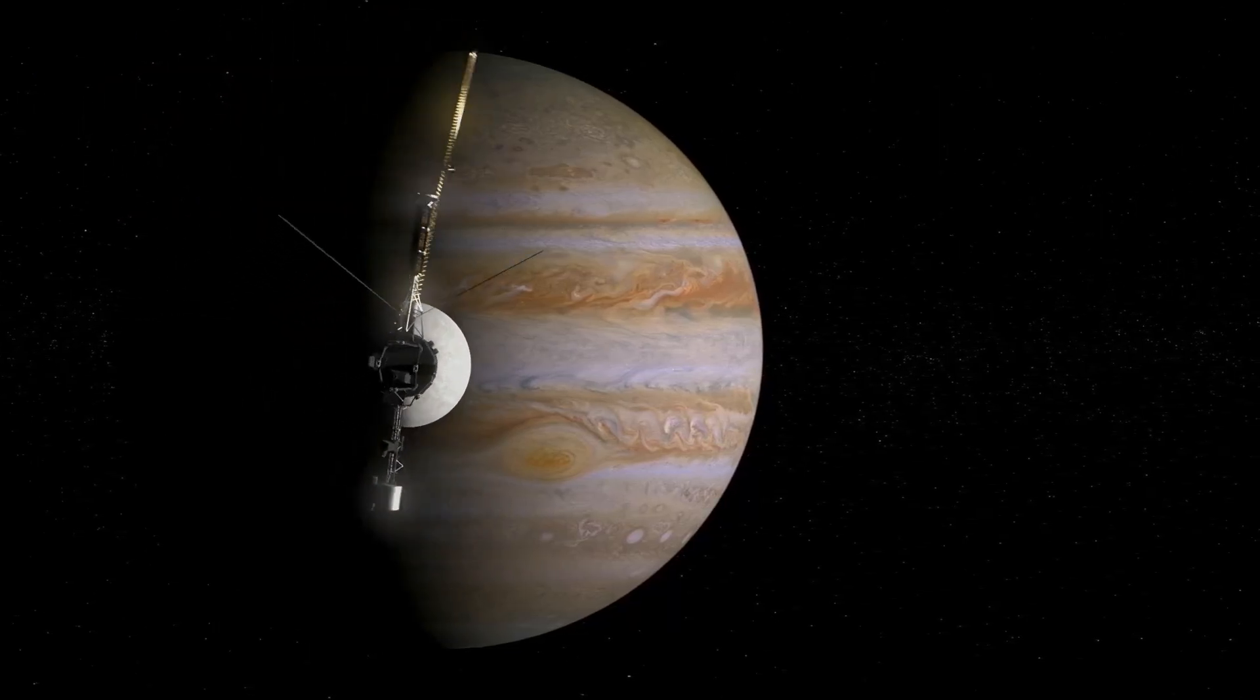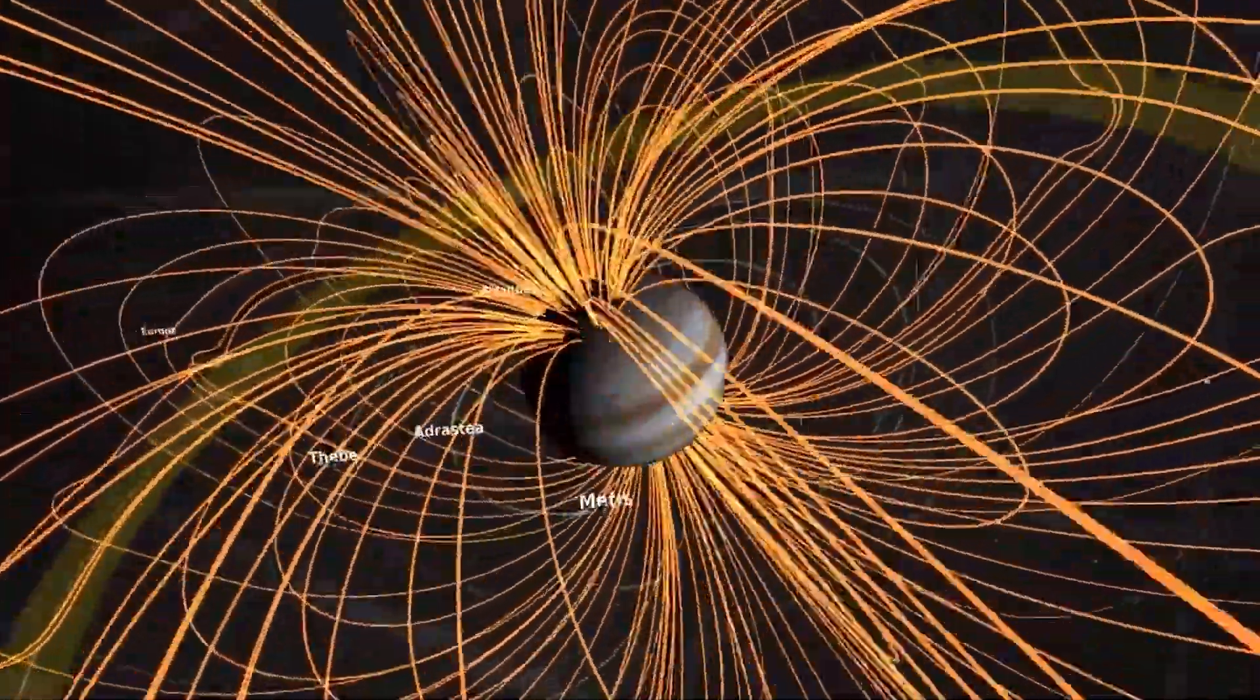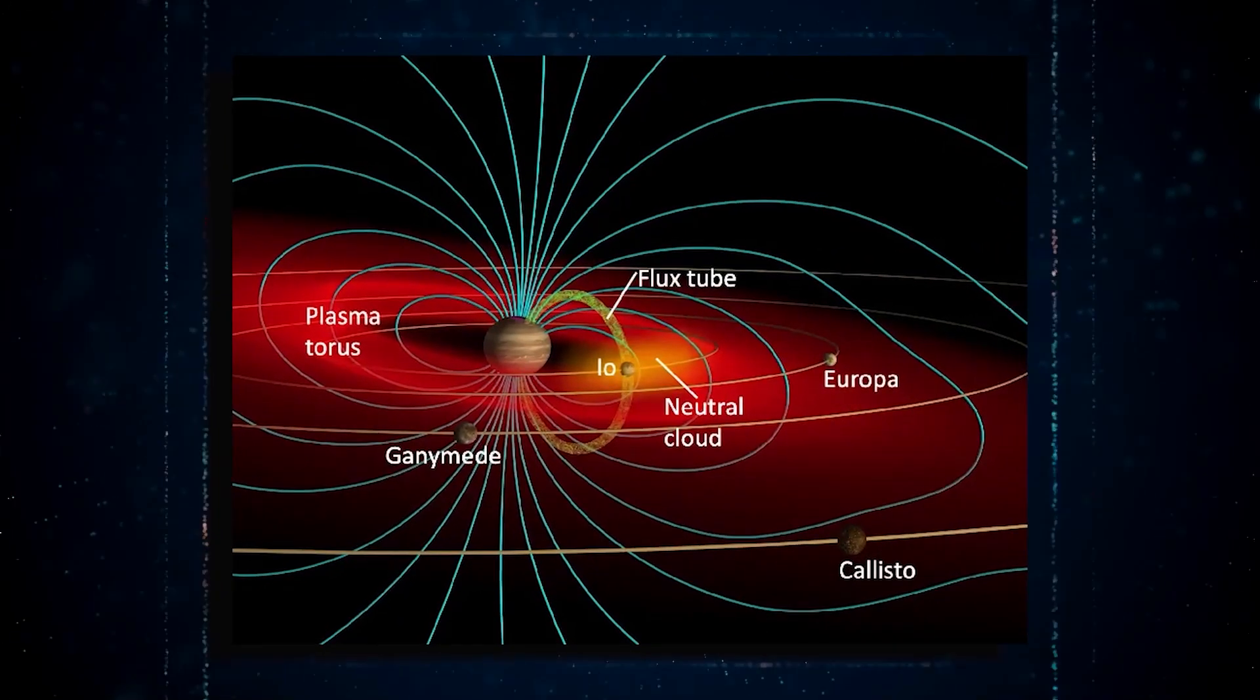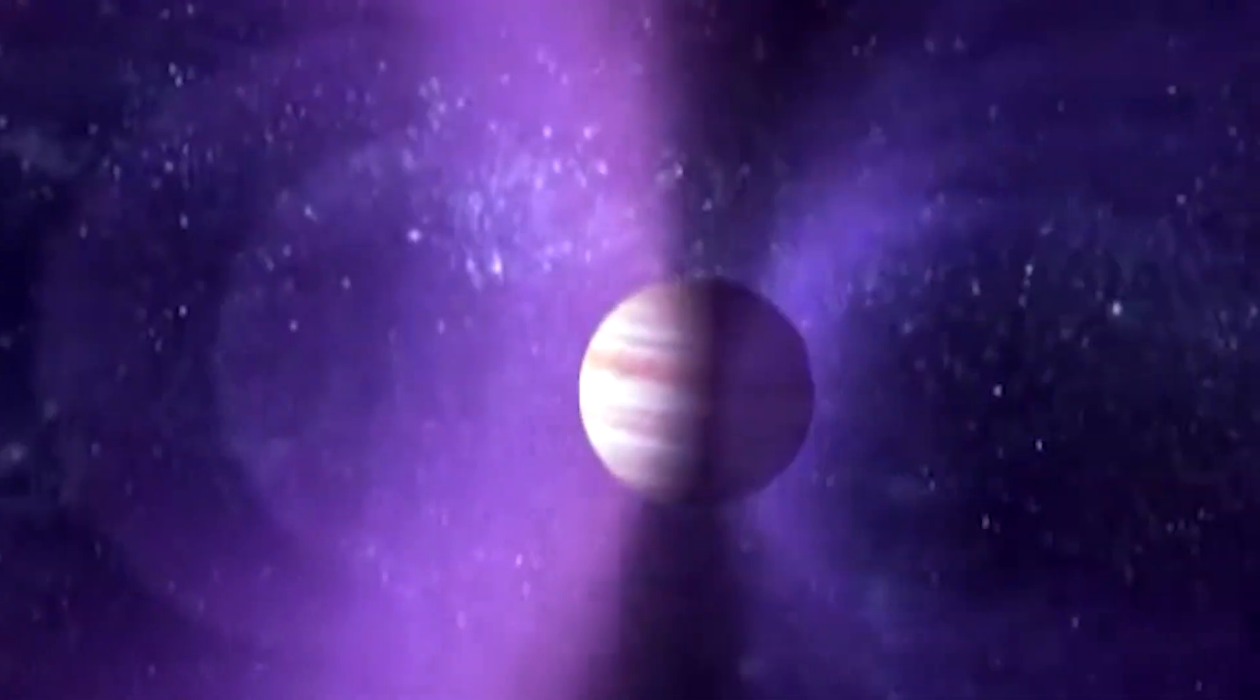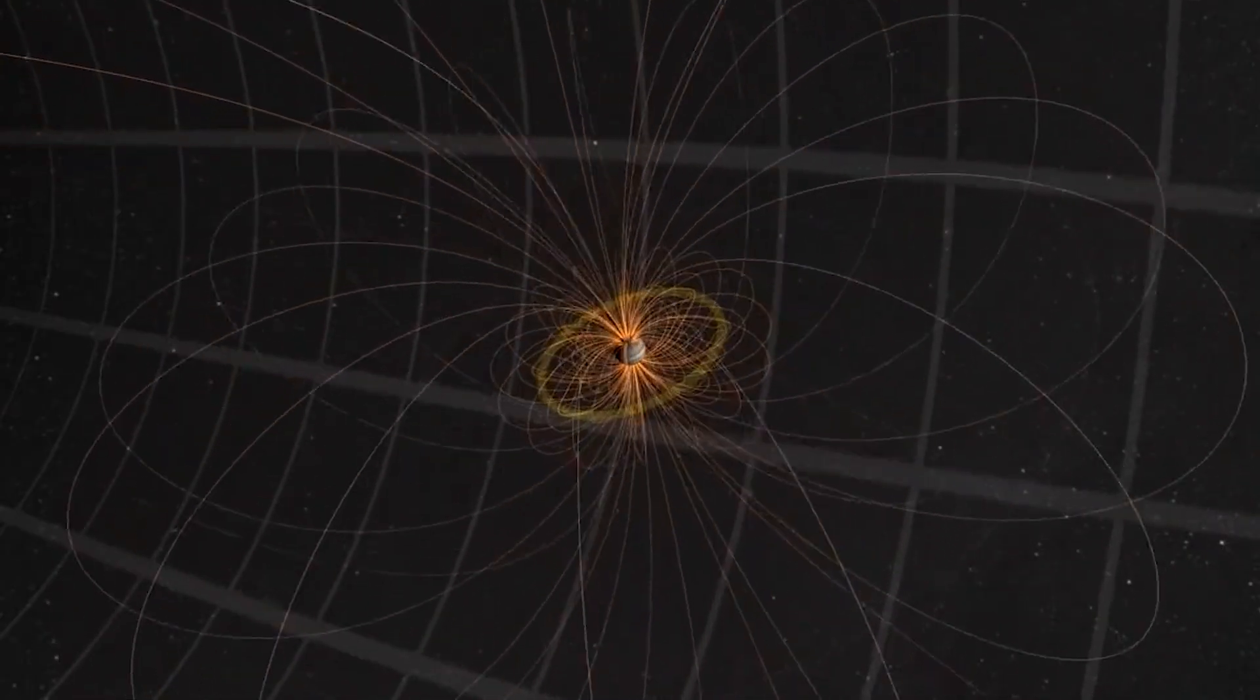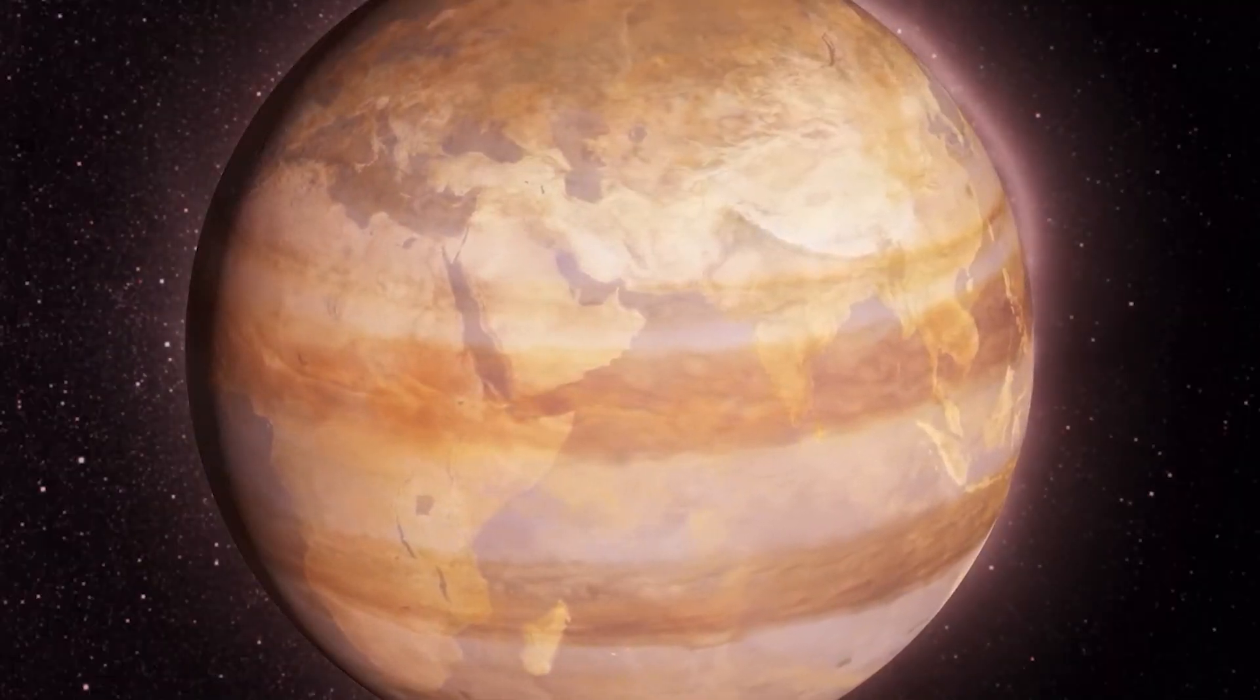Voyager's measurements uncovered unexpected irregularities in the magnetic field, characterised by distinct regions of varying strength and complexity. These discoveries challenged the established models of planetary magnetic fields and paved the way for further exploration. Scientists are diligently examining the Voyager data, hoping to unlock the mysteries surrounding Jupiter's enigmatic magnetic fields and their impact on the planet's dynamic atmosphere.